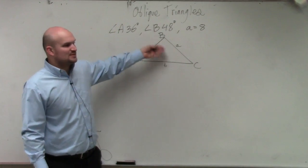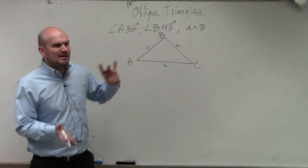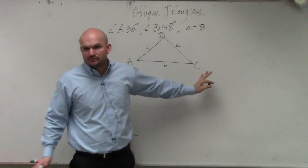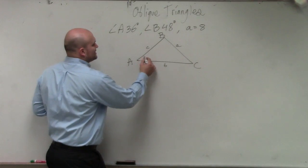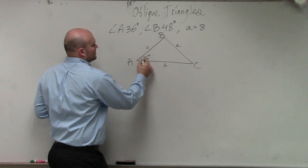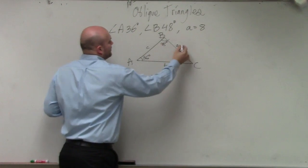But once we put in the angles, we might realize that it should look like the other triangle. Anyway, we know A is 36 degrees, and we have B, which is 48 degrees. And then we know a is 8.